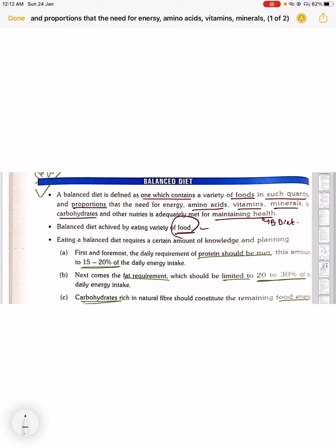Eating a balanced diet requires a certain amount of knowledge and planning. Both knowledge and planning are required. If you have no balanced diet, then you can be prone to disease, so you should take some advice from your doctor.